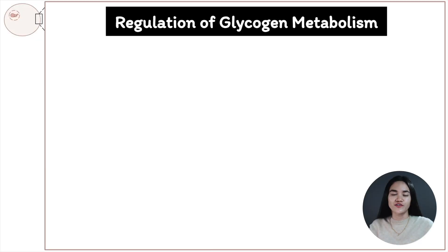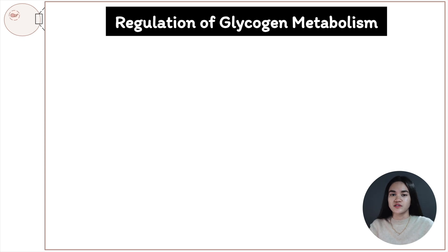In this video we're going to cover the regulation of glycogen synthesis and degradation. By the end of this video you'll understand the overview picture of how glycogen synthesis and degradation are integrated, the key enzymes involved, and how they are regulated allosterically and hormonally. Then we're going to zoom out to see the regulation of carbohydrate metabolism in the liver.